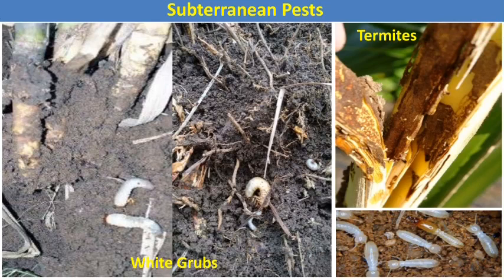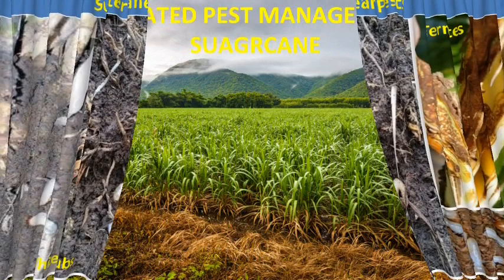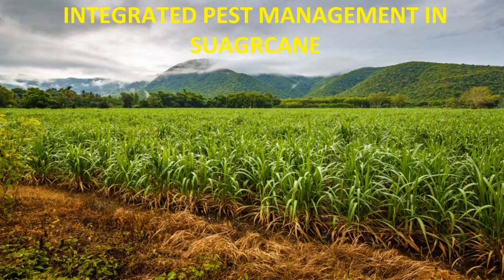These are the different categories of pests which attack on the sugarcane crop. Now let us start the main important topic — Integrated Pest Management. Integrated Pest Management means using methods or techniques such as cultural methods, mechanical methods, biological methods, and chemical methods in combination to control or manage different insect pest populations in sugarcane.